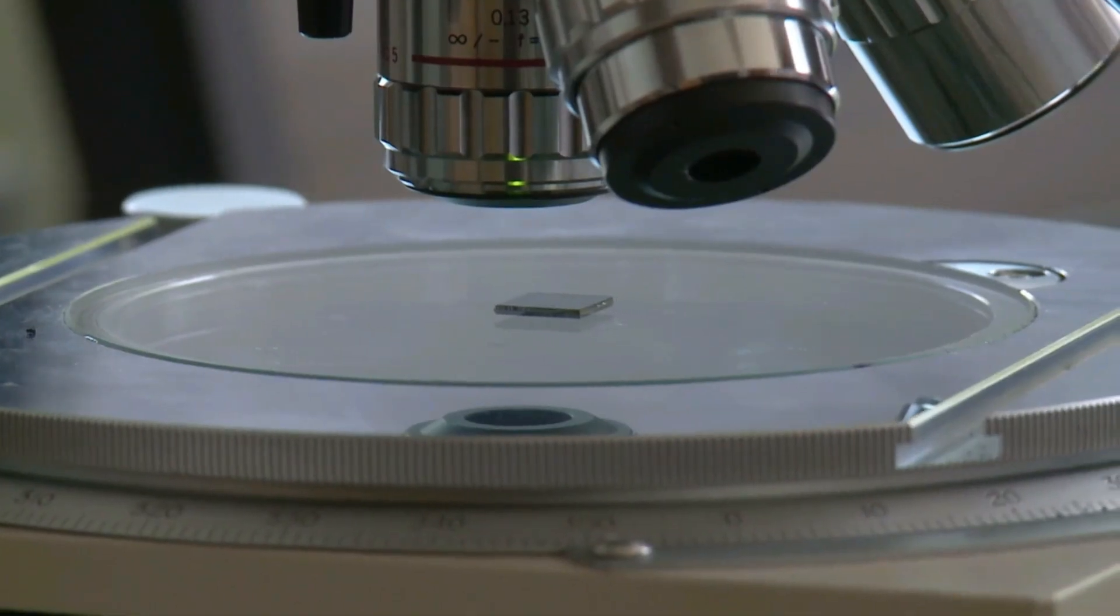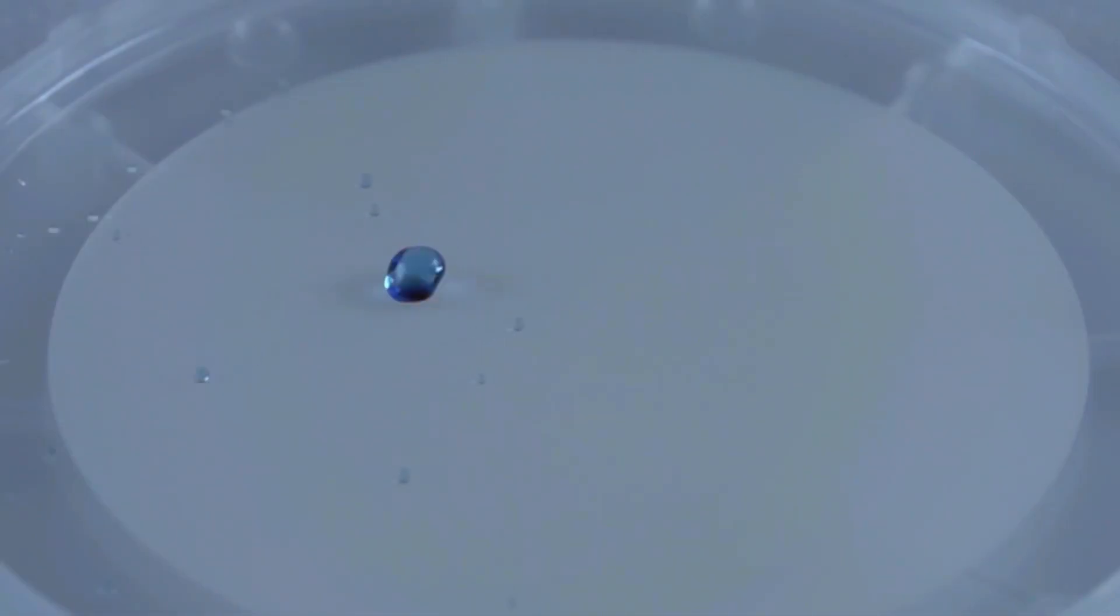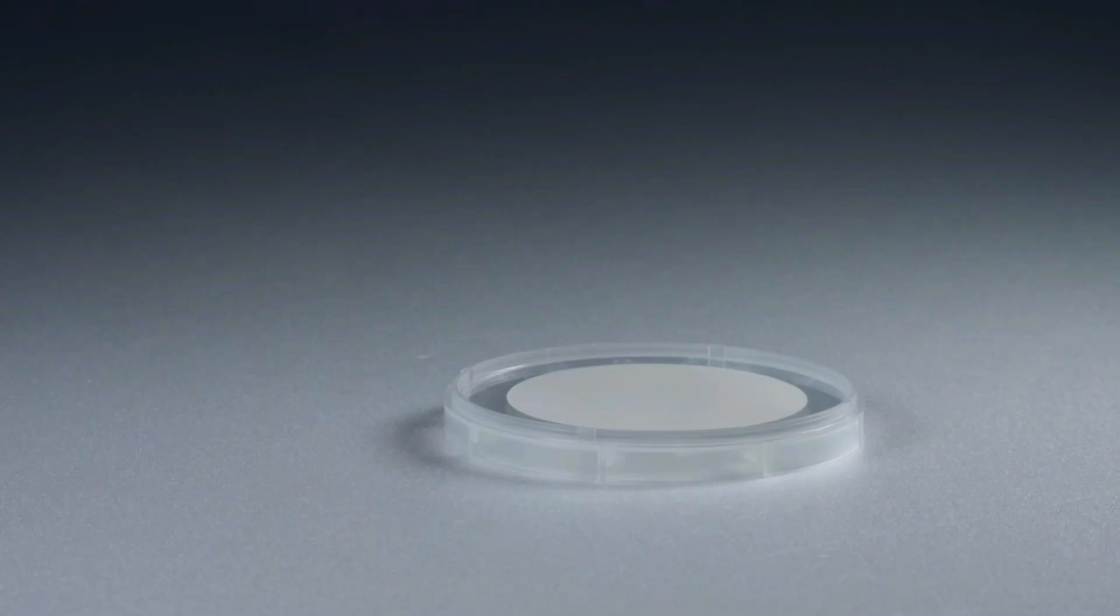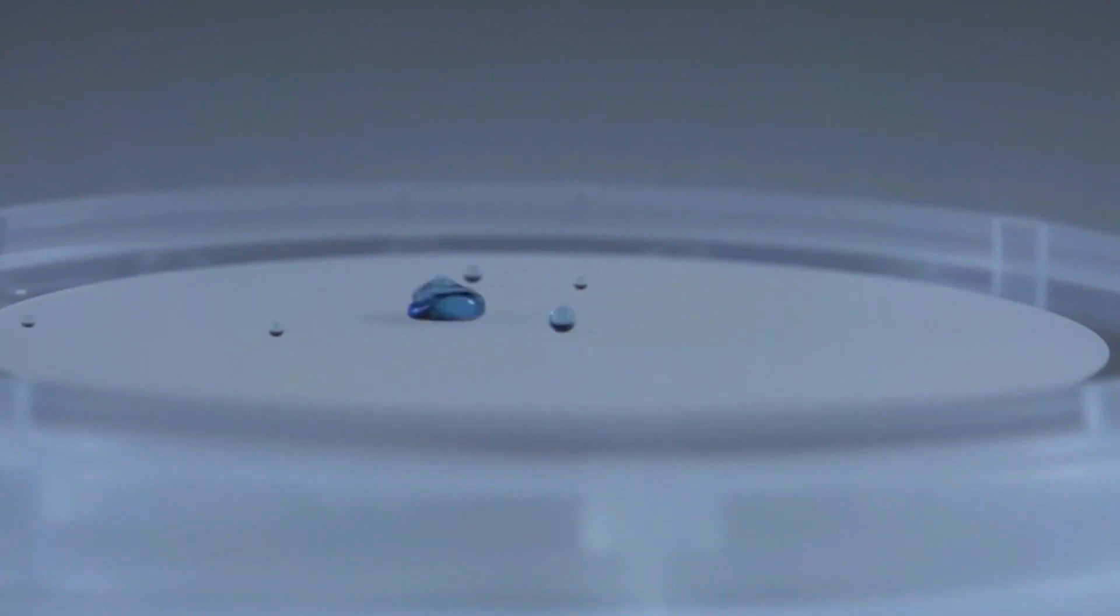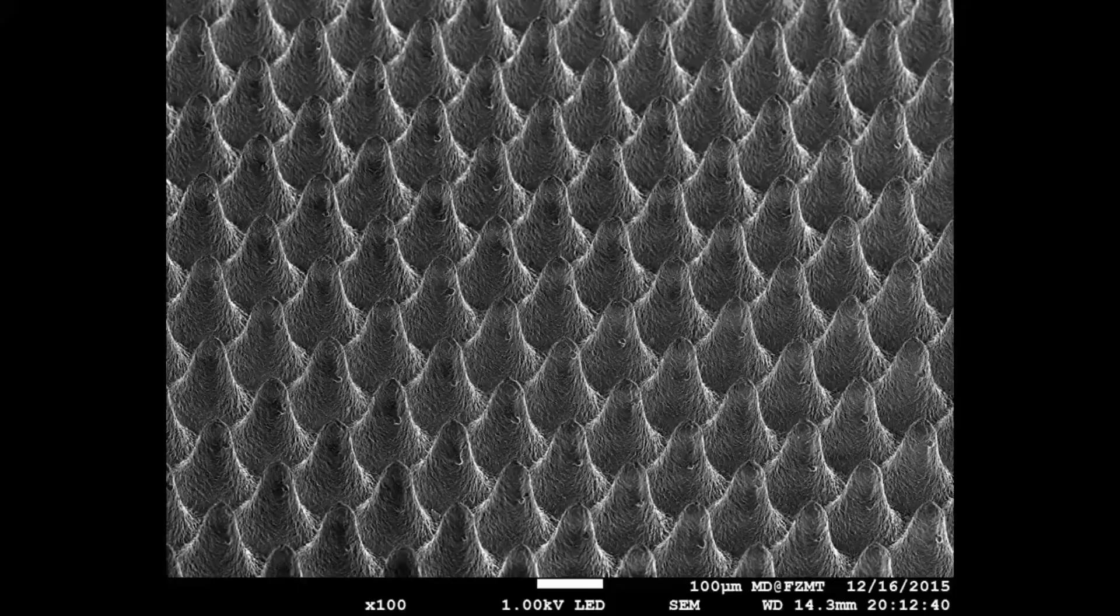One research focus at the Joseph Russell Center is the production of functional surfaces. This means that a surface is changed in such a way that, for example, water drips off at certain positions. It becomes super hydrophobic, similar to a lotus flower.